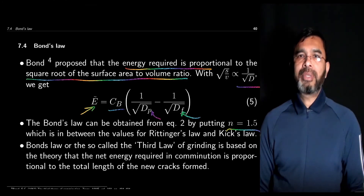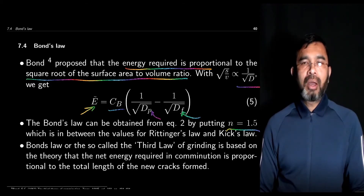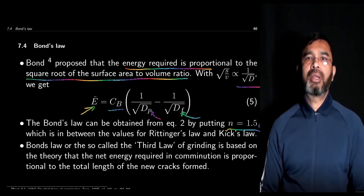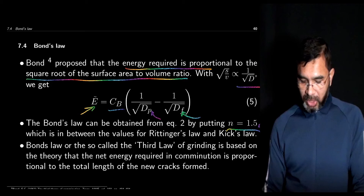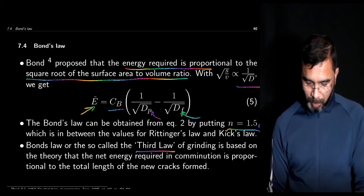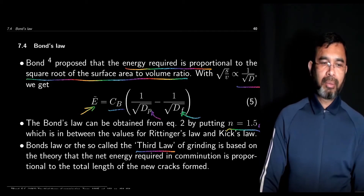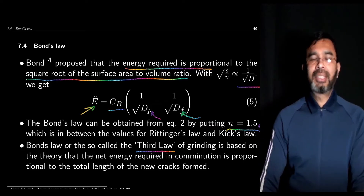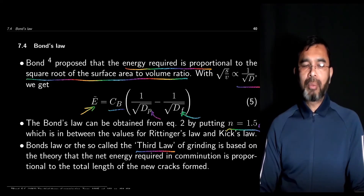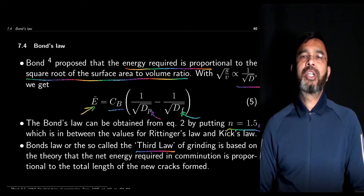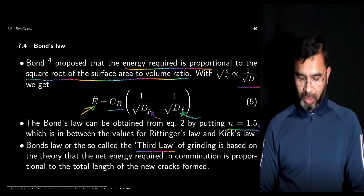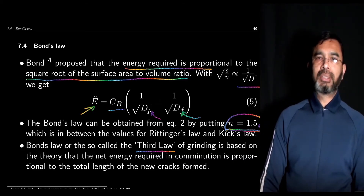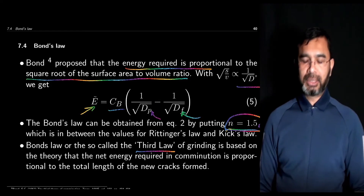The value n equals 1.5 is totally between n equals 2 for Rittinger's law and n equals 1 for Kick's law, so Bond's law lies in between these two. Bond's law, called the third law, was proposed in 1952. Bond argued that Rittinger's law and Kick's law do not fit commercial crushing data over a long range, so he proposed something that lies in between these two values of n.